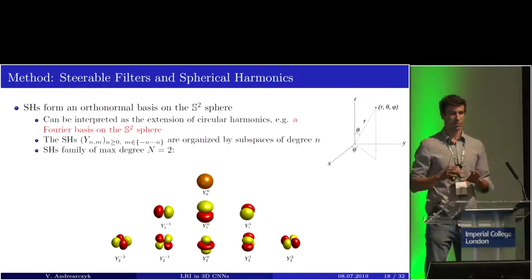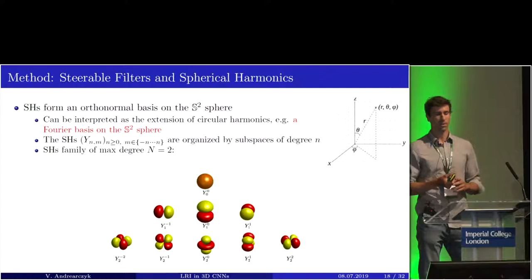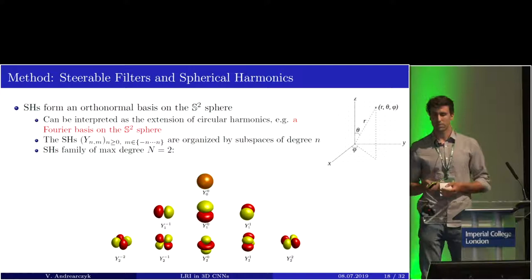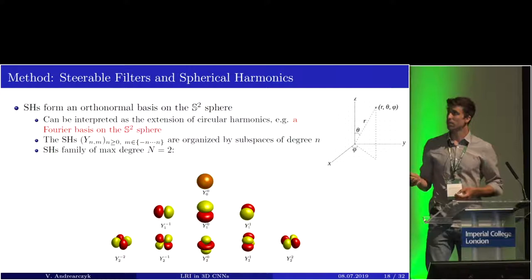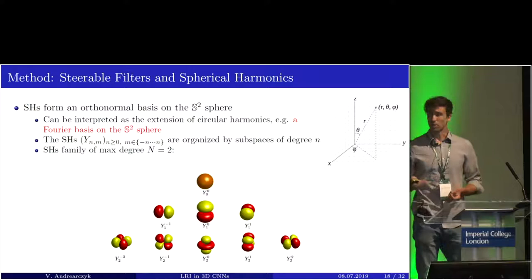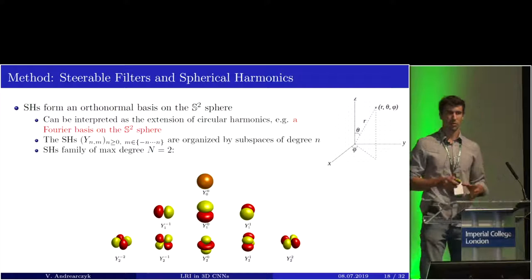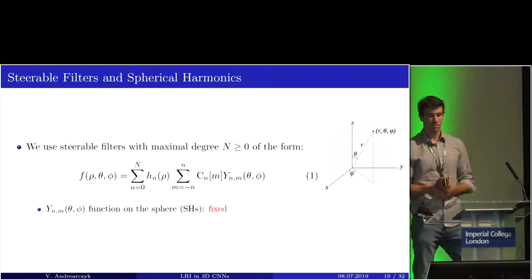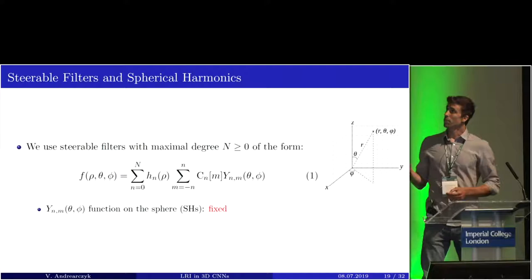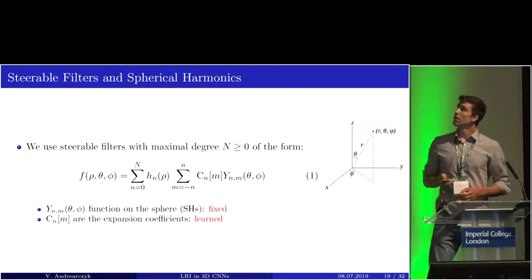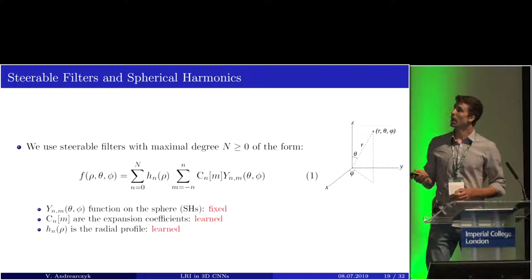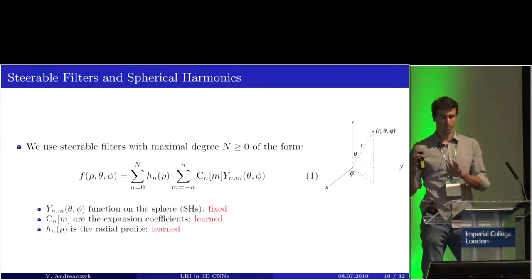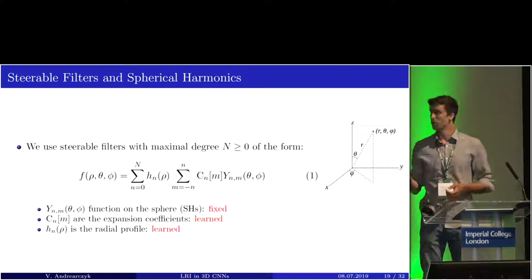In this work, we construct 3D steerable filters in the span of spherical harmonics. Spherical harmonics form an orthonormal basis on the sphere and can be interpreted as the extension of circular harmonics — a Fourier basis on the sphere. They are organized in subspaces of degree N, where the degree is related to the angular frequency of the harmonics. We use steerable filters with a maximum degree N greater than zero. The filter is a combination of spherical harmonics fixed on the sphere, expansion coefficients C that are learned, and a radial profile H that is also learned, used to project the function onto a 3D volume for our 3D CNNs.